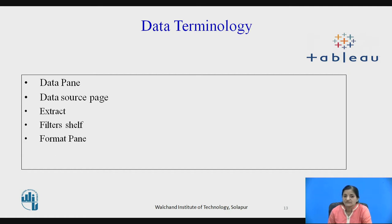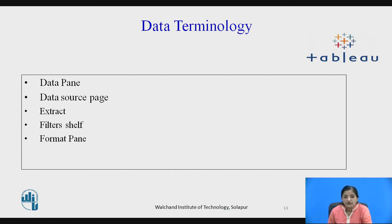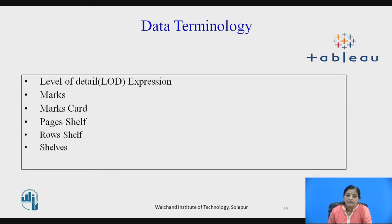Filter shelf is on the left side of your worksheet. You can drag dimensions and measures into the filter shelf to filter out data from the view. Format pane consists of various settings for controlling the formatting options of a worksheet or individual fields. Level of detail expression is a syntax that supports aggregate expressions, and it can be used to attach one or more dimension members to an aggregate expression.